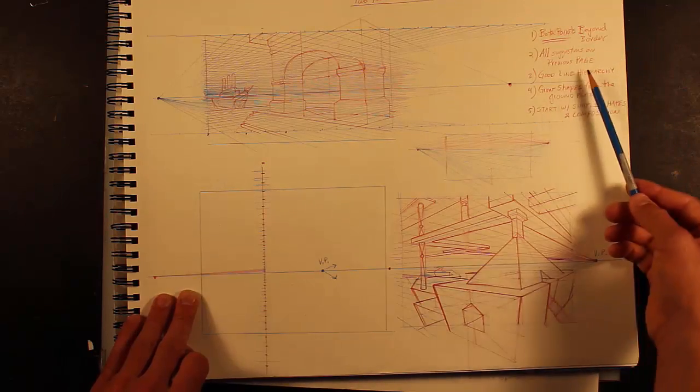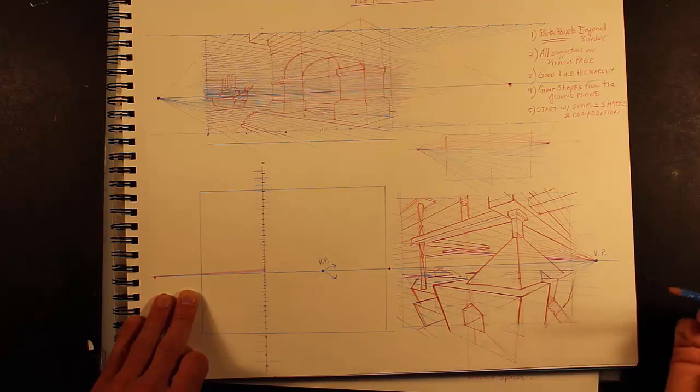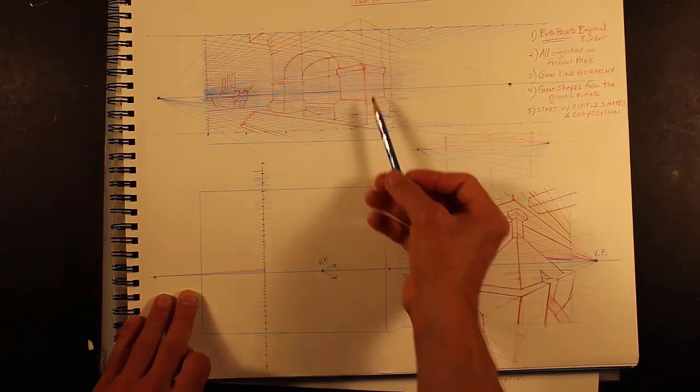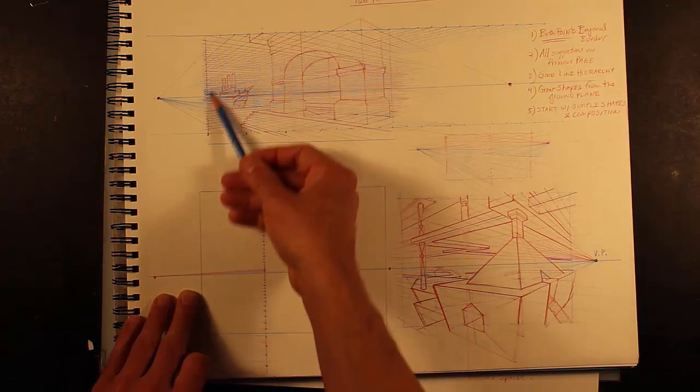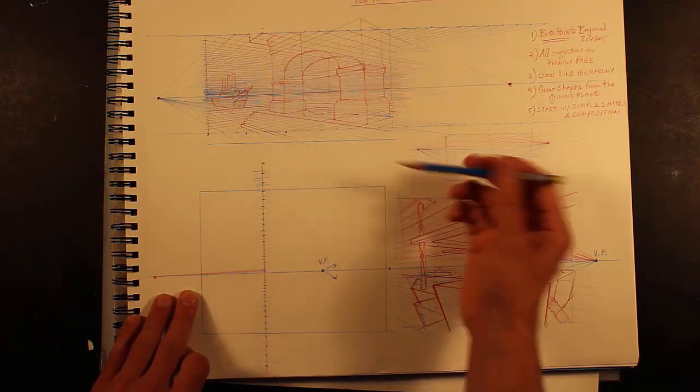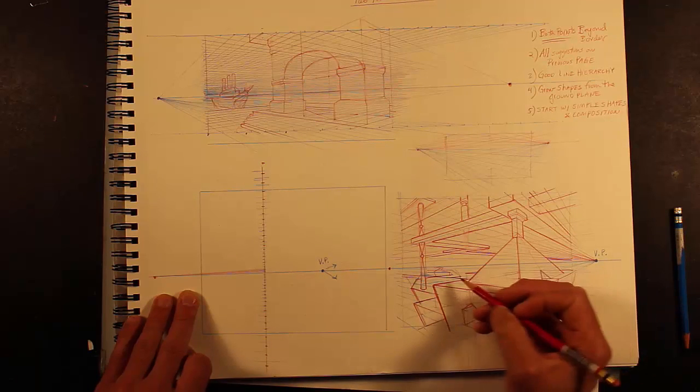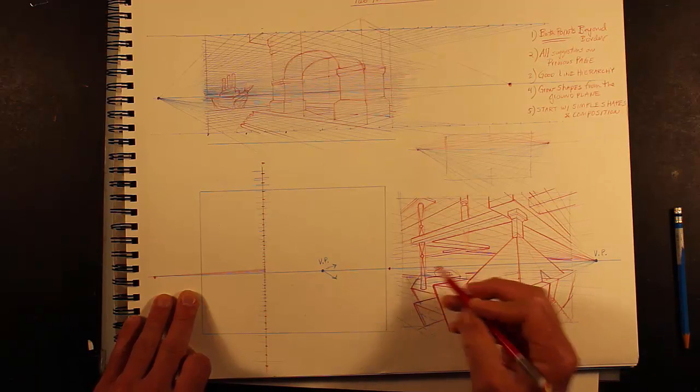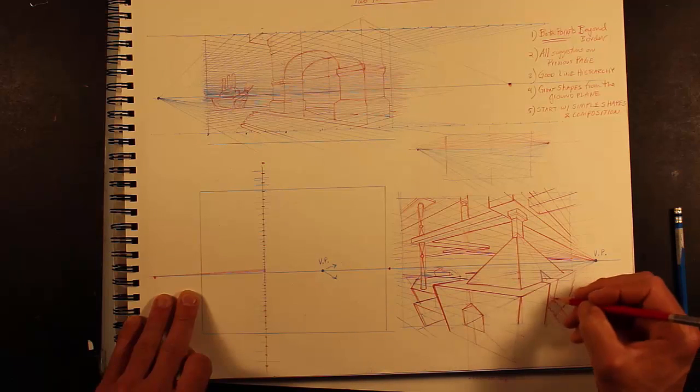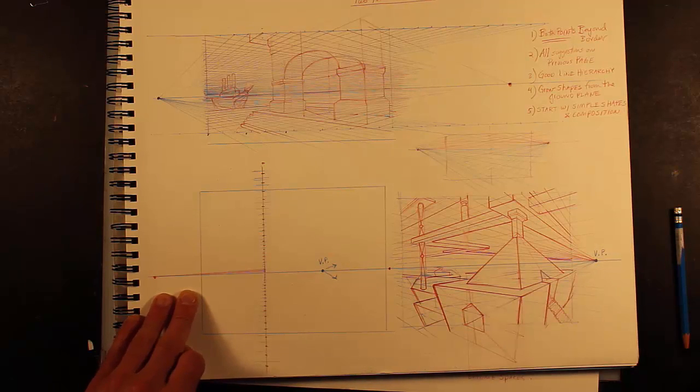Pay attention to all suggestions on the previous page. Good line hierarchy, meaning it's clean, so it's not as important, but to help avoid confusion, you really pull out shapes that are in foreground and let other ones in back recede, and it helps to clarify the image for you.